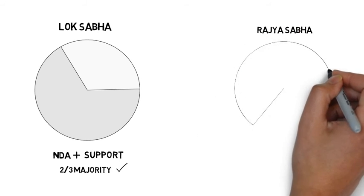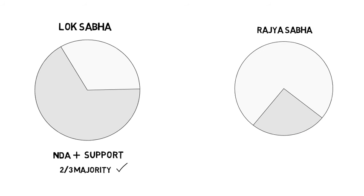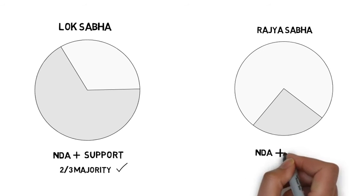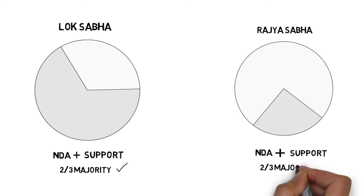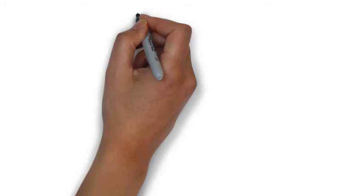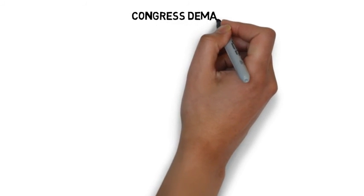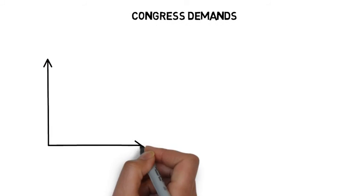However, with only 61 seats in Rajya Sabha, BJP still requires the support of Congress and other parties to get the bill passed in the upper house. Congress on the other hand has put certain objections for not supporting the bill.